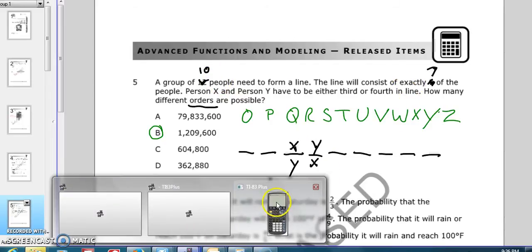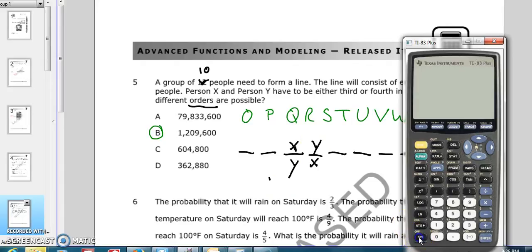And so, if we go to our calculator, and if we hit 10, and then math, and over to PRB, and 2 for permutation, and 7, we get 604,800, which is one of our answers.